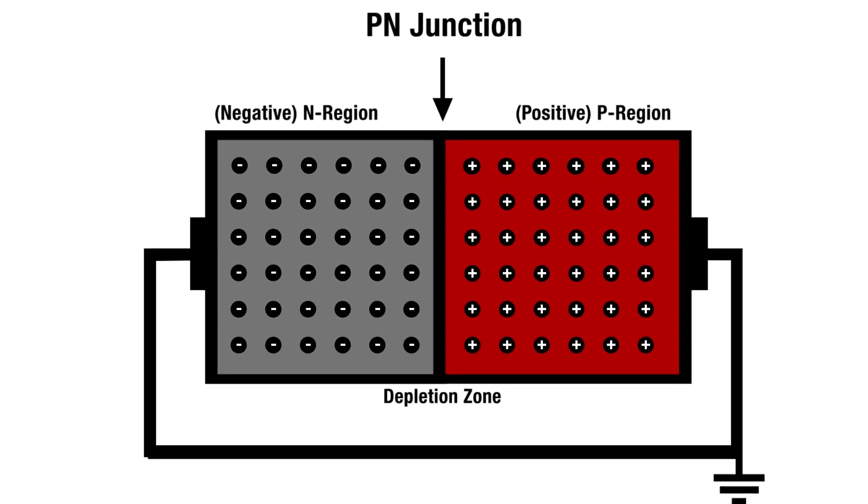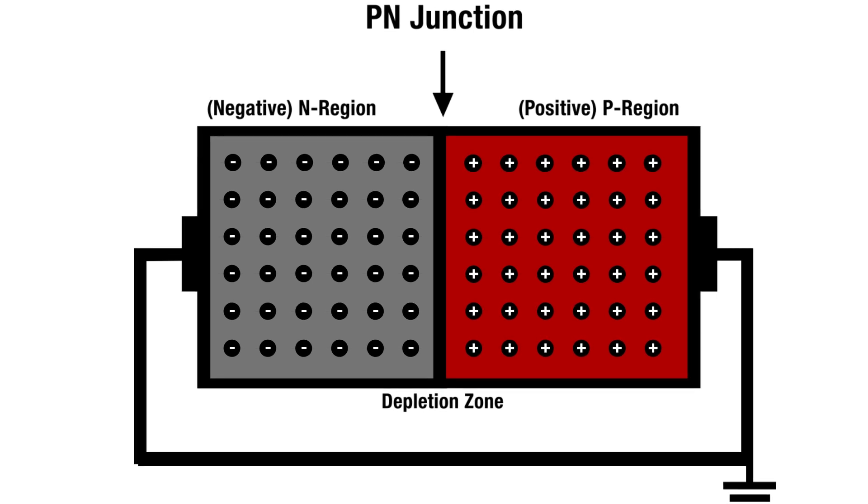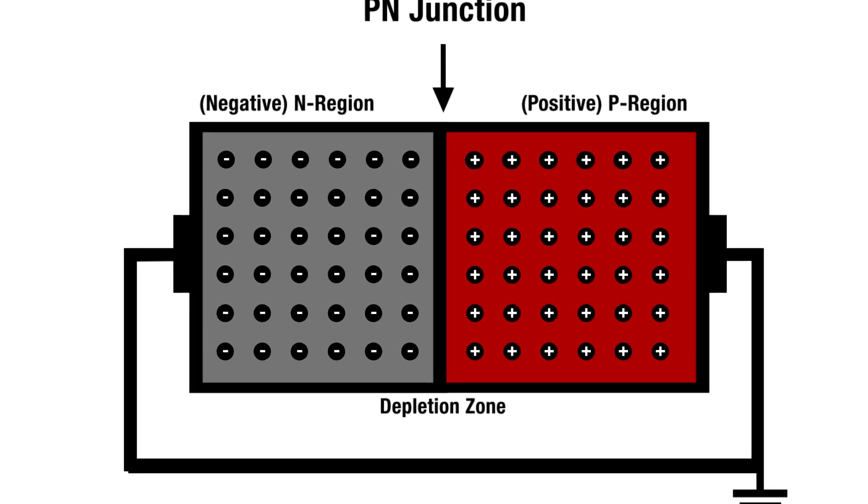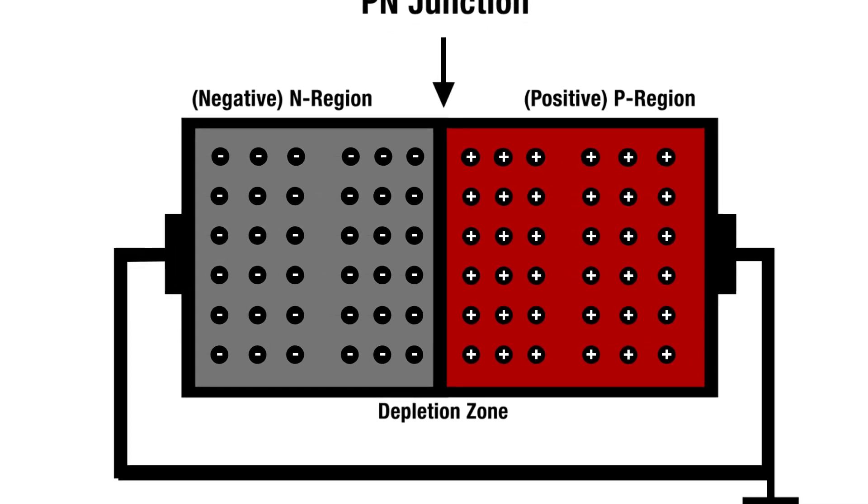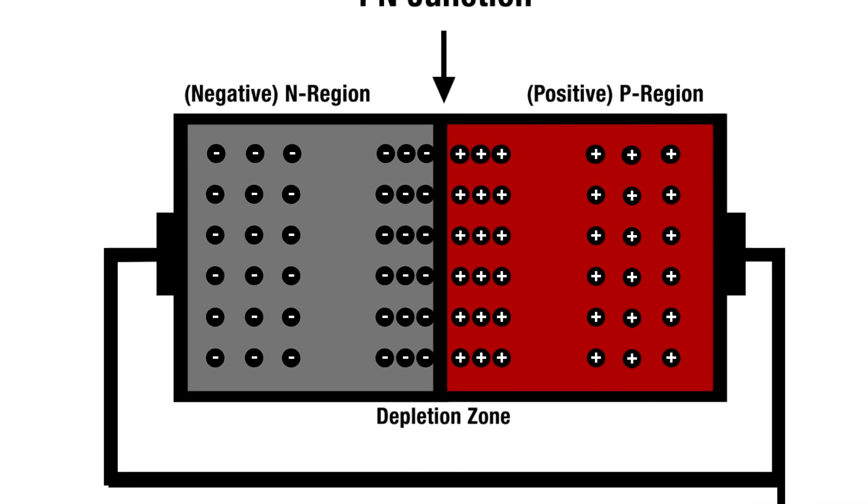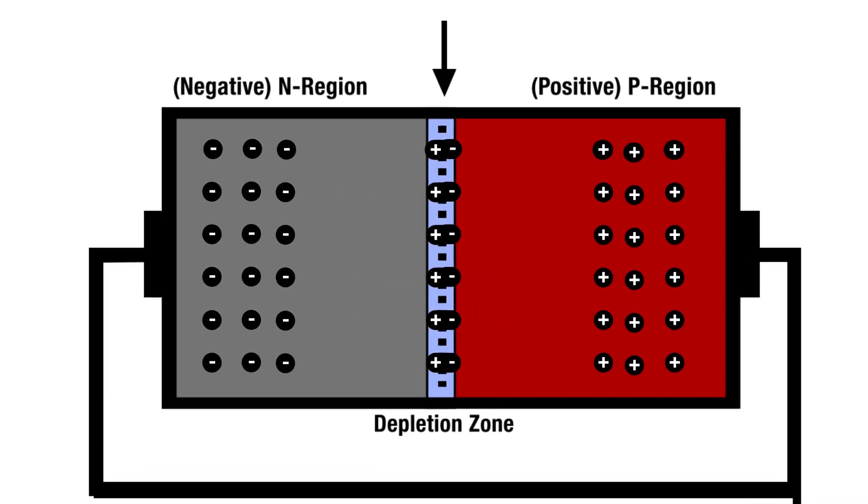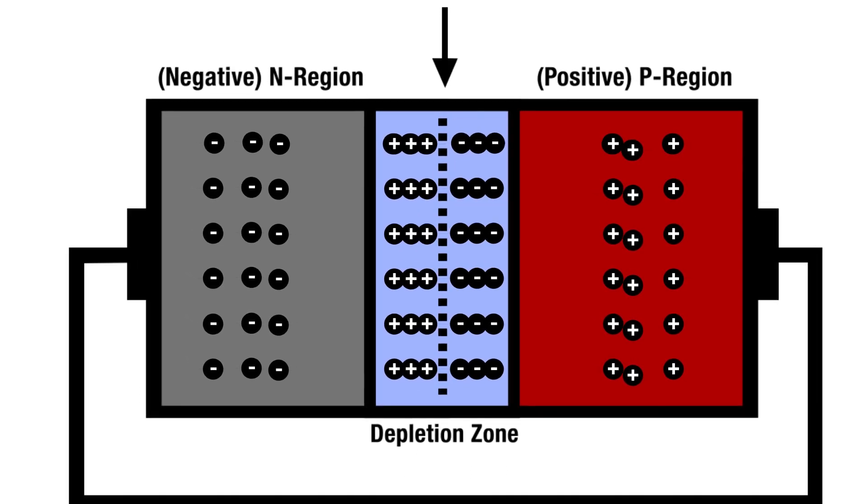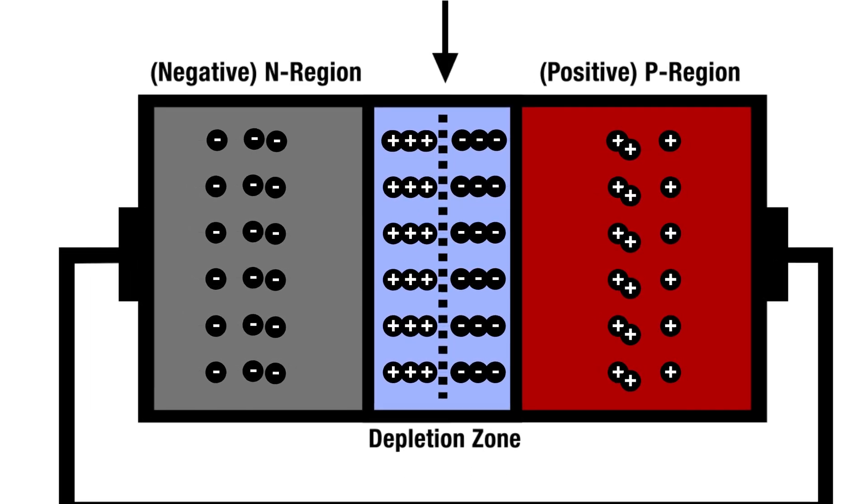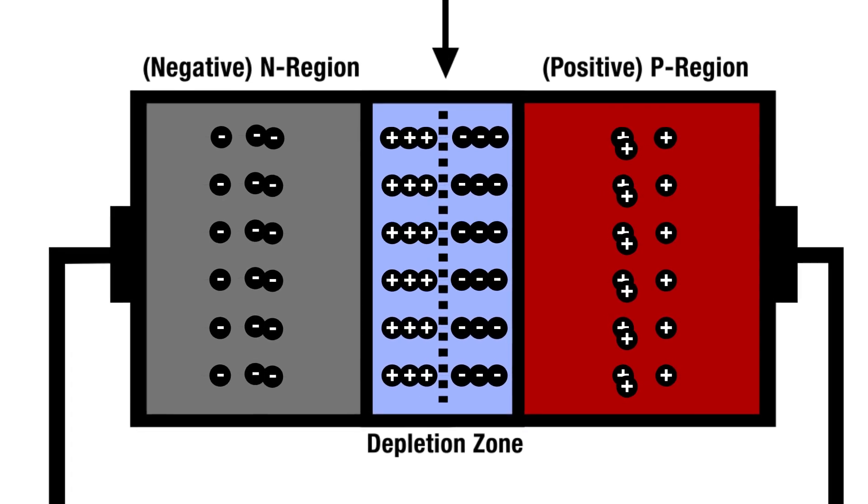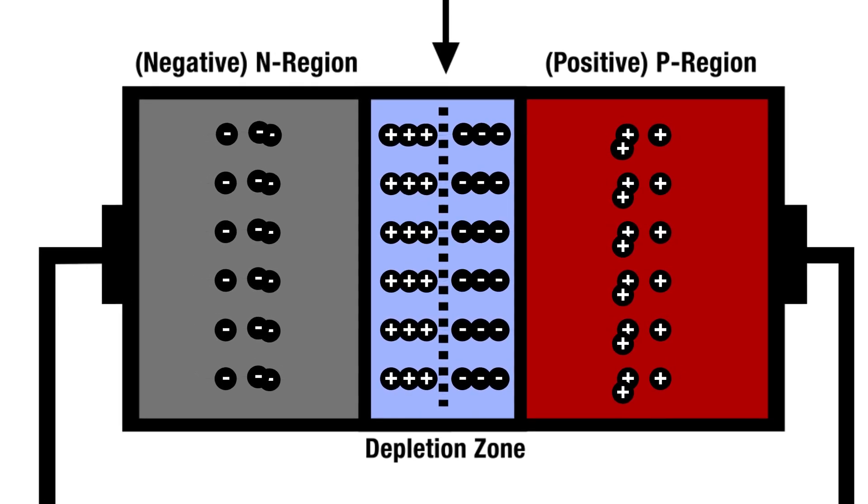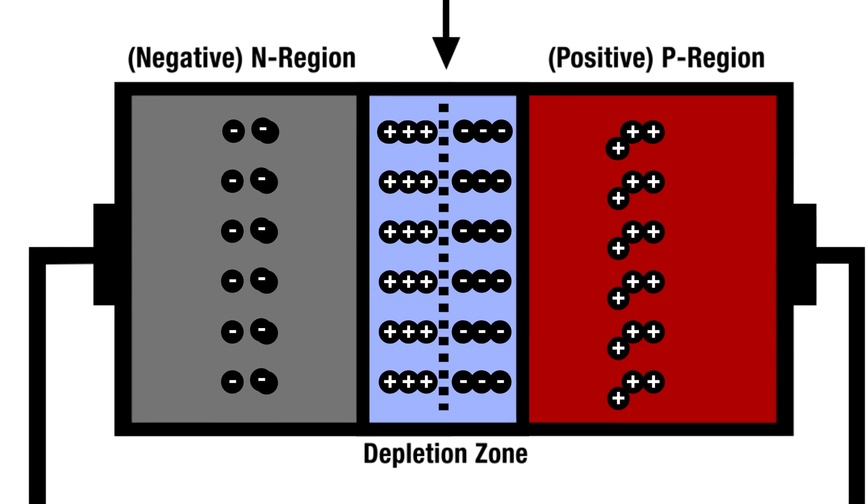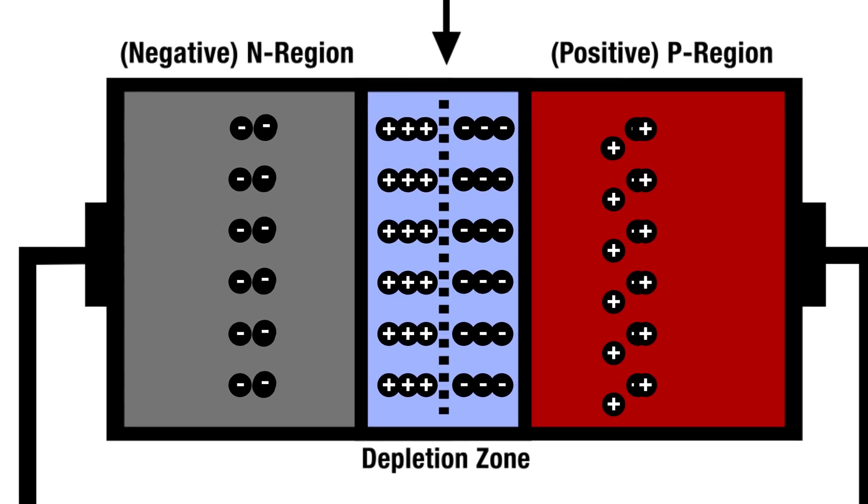Near the junction, the positive charges and the negative charges, having opposing charges, are drawn to each other like magnets. The free electrons in the n-type region migrate over and fill the holes in the p-type region. Because of the charged particles moving around, the area near the junction in the p-type region becomes slightly negatively charged, while the area near the junction in the n-type region becomes slightly positively charged. This area is known as the depletion zone.